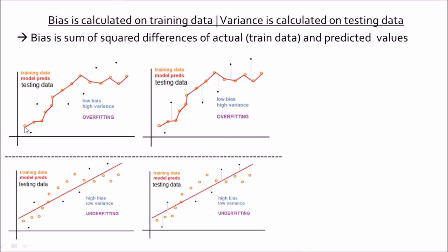If I try to see what the value is for a prediction point, it is the same as the orange dot. So the prediction value is very close to the actual value, meaning the sum of squared differences will be very close to zero. For example, if the IQ was 10 and my prediction is 9.95, I sum all these squared differences — that is my bias.